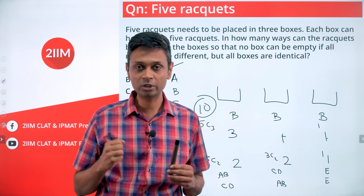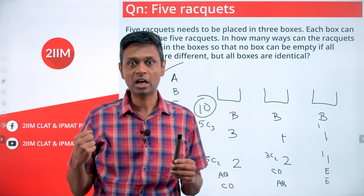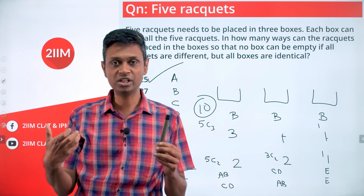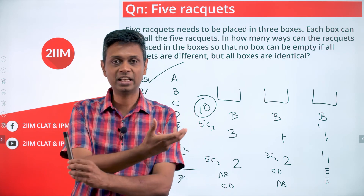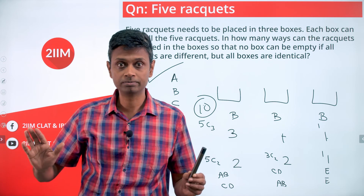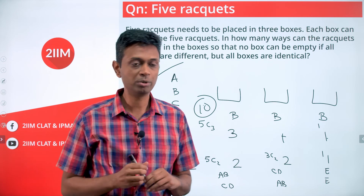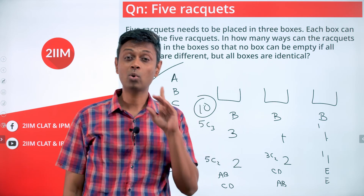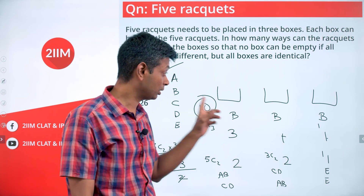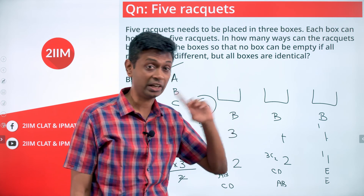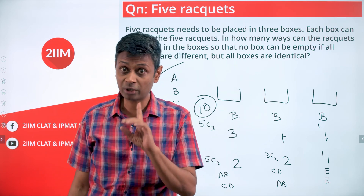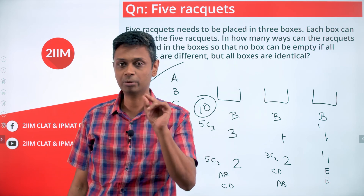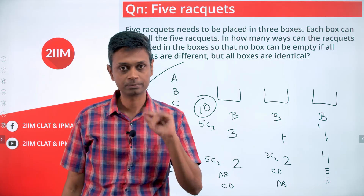5C2 × 3C2 ÷ 2 = 10 × 3 ÷ 2 = 15. For (3,1,1), 5C3 = 10. Total = 10 + 15 = 25. This is a beautiful question precisely because of this final catch: we must not do 5C3 × 2C1, and for (2,2,1) we must divide by 2 — all because the boxes are identical.